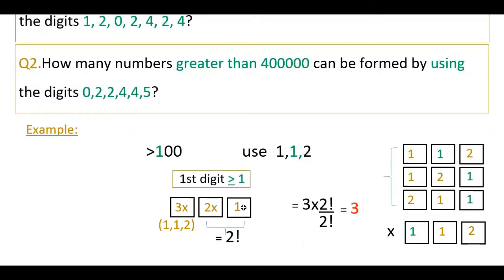In the second box, already one digit is used, so you write the remaining two digits, and then one — that is 2 factorial. So the calculation is: 3 × 2! ÷ 2! (since 1 is repeating two times) = 3. The required numbers are three: 1,1,2 — 1,2,1 — 2,1,1. Even though 1 appears in different colors, swapping the two 1s gives the same number, which is why we divide by the repetition count.